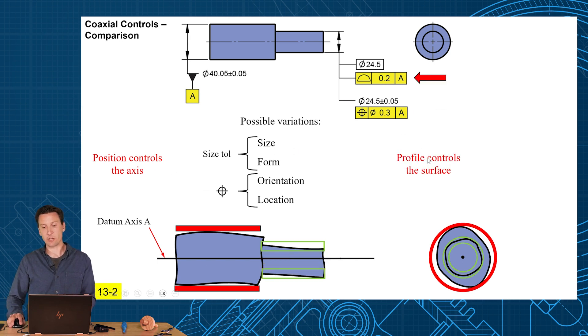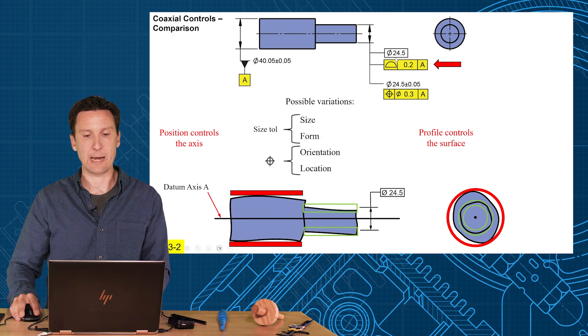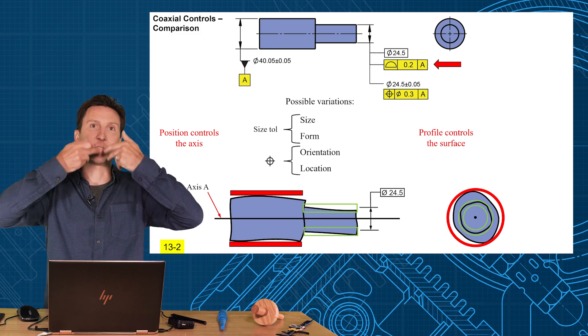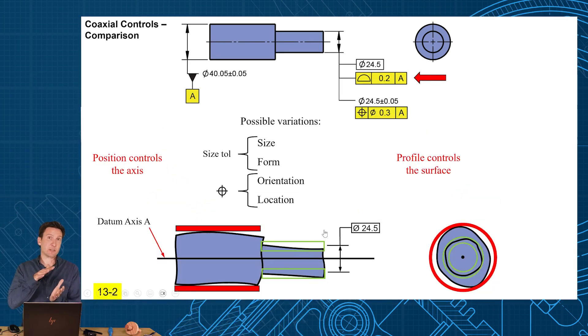Now profile is a little different. It controls the surface directly. We use a basic dimension for the diameter and we let the profile tolerance apply around the surface of the feature. So that profile tolerance is actually controlling everything. You're controlling the size, the form, the orientation, and the location all in one shot. So that's really the question of which symbol do you want to use here? Do you want a separate size and then a separate location? Or do you want to just group it all and just say profile that surface relative to my datum?